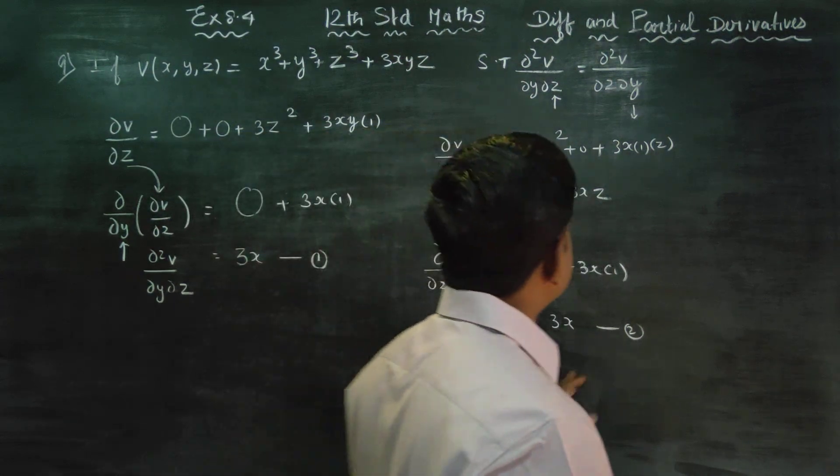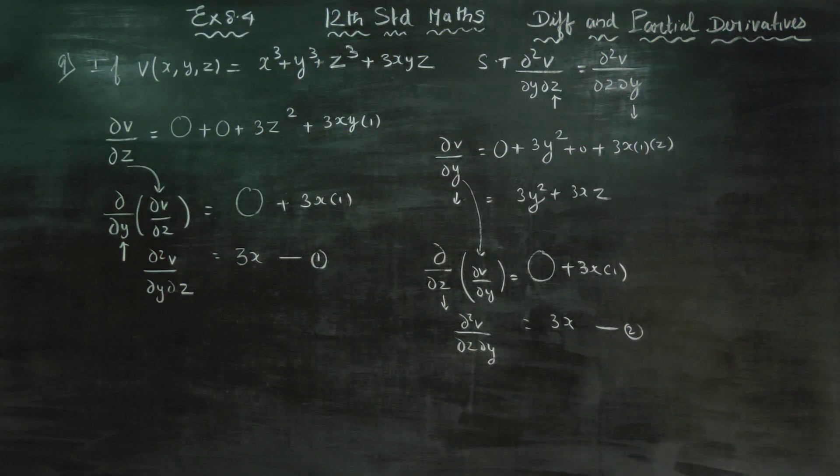From 1 and 2, the answer is equal. From 1 and 2, you have to declare d²v/dy dz is equal to d²v/dz dy. Okay. Thank you.